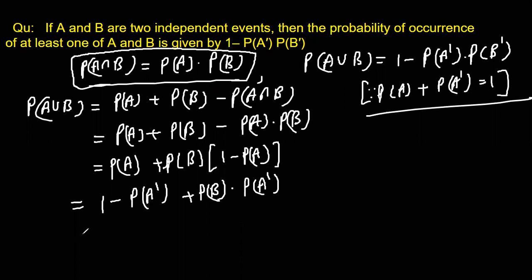So this thing now is equal to, if we see these two terms we have P(A') common. So can we write it 1 minus P(A'), and if I take P(A') common this becomes 1 because I take negative common. So this part becomes positive minus P(B). Same logic, 1 minus P(B) will be P(B').